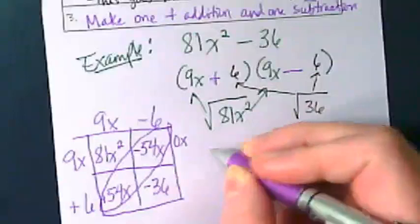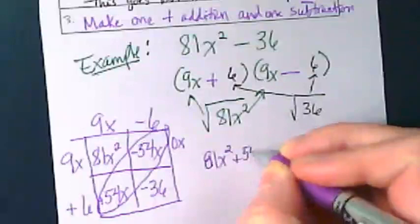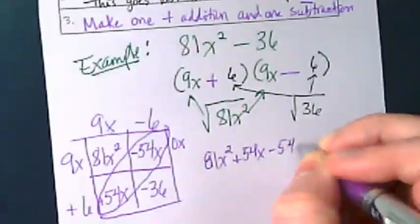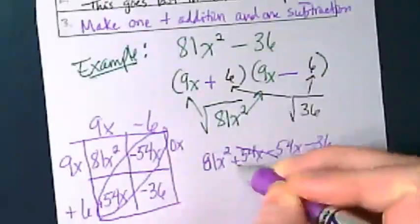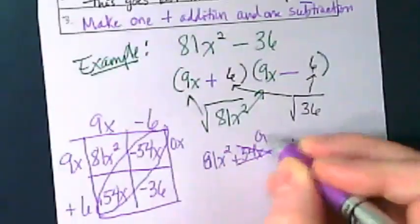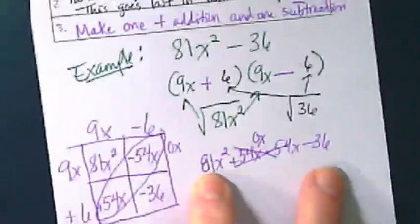What we have is 81x² + 54x - 54x - 36, with the middle terms as 0x. This leaves us with the first term and the last term.